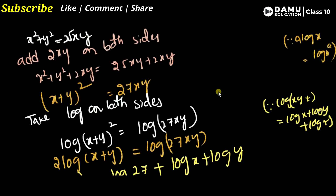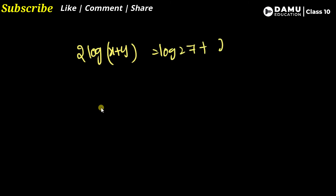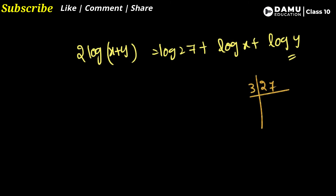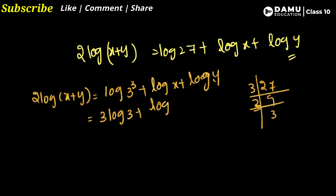We have log x + log y on the right side, and we need to get 3·log 3. Since 27 = 3³, we write log(3³) = 3·log 3. So 2·log(x + y) = 3·log 3 + log x + log y.